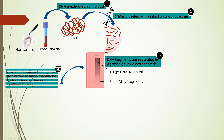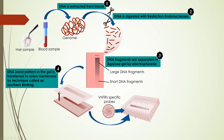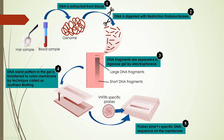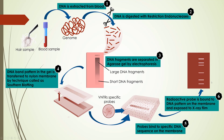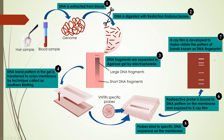We transfer the DNA bands from the gel to a nitrocellulose membrane by a technique called Southern blotting. We then incubate the membrane with radioactive VNTR probes, and these probes bind to specific DNA sequences on the membrane, which is exposed to X-ray film. The X-ray film is developed to make visible the DNA band patterns — this is known as DNA fingerprinting.